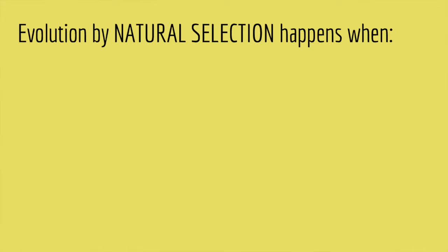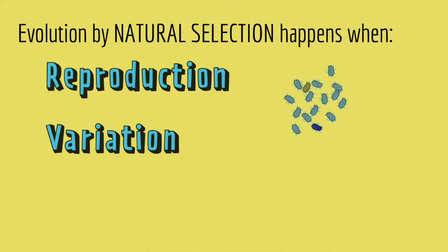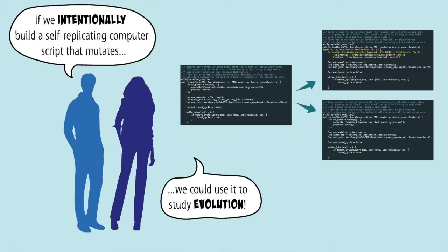Natural selection happens when three things are true: organisms reproduce by making genetically similar copies of themselves; there's genetic variation between the offspring because mutations cause imperfect copying; and some genetic variants are better than others at surviving and reproducing. So the scientists thought, if we intentionally build a self-replicating computer script that mutates, we could use it to study evolution.